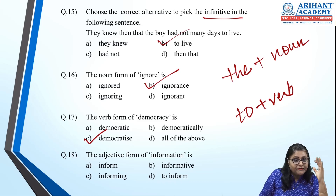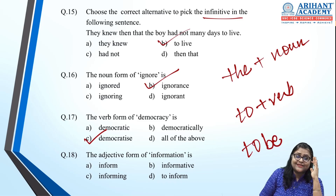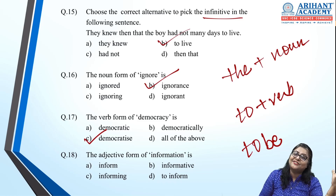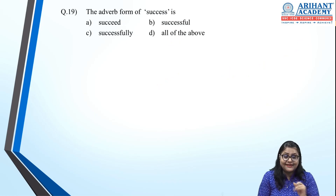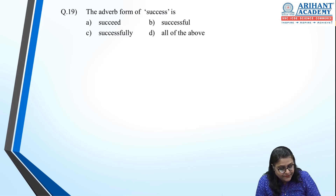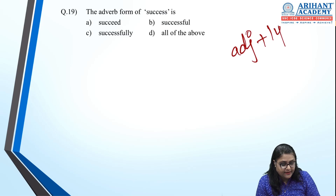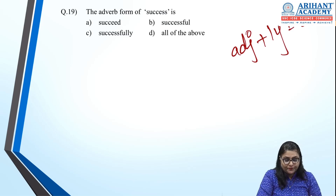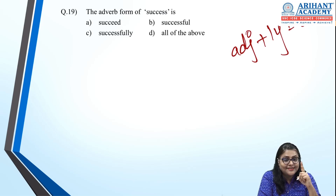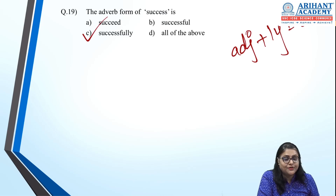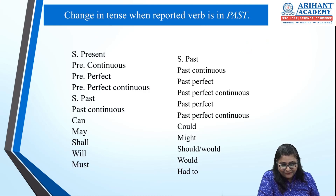For adjectives, you can add 'to be' before them — 'to be tall', 'to be handsome'. The adjective form of 'information': 'to be information' is not possible, but 'to be informative' is correct. For adverbs, adjective plus '-ly' becomes an adverb. The adverb form of 'success': 'successful' plus '-ly' gives 'successfully', so option C is correct.